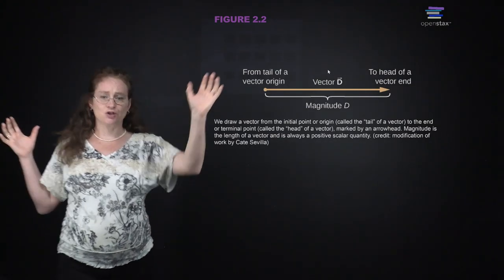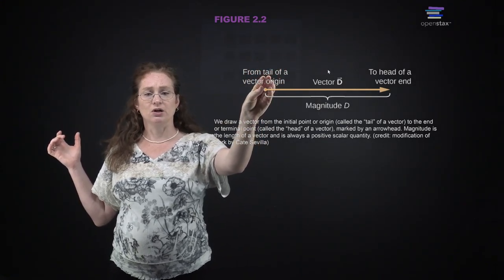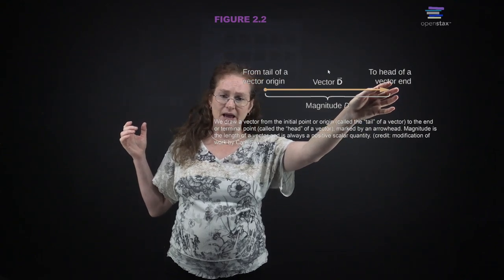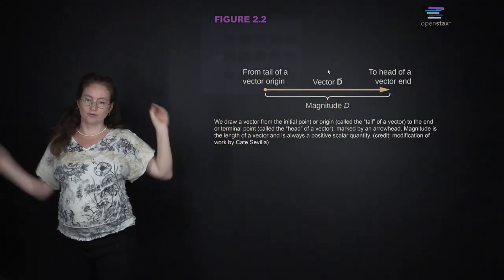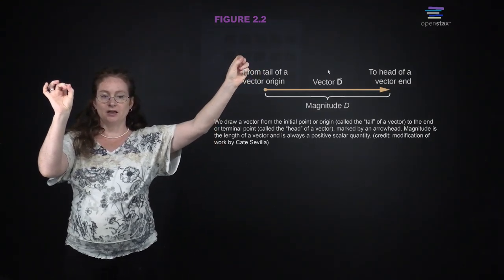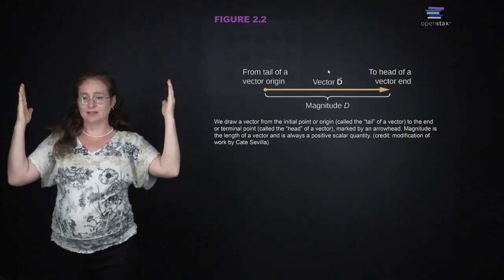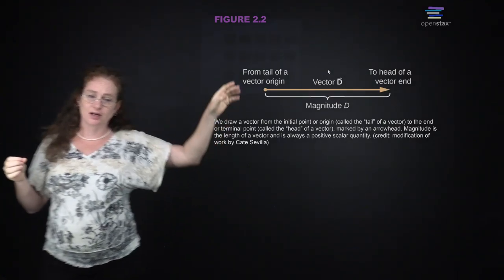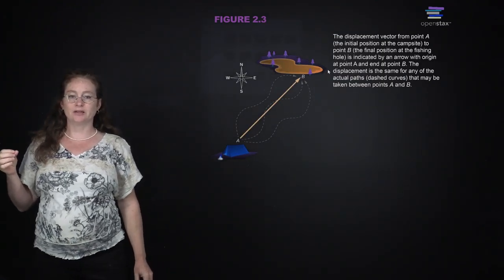When we have a vector, we start with the tail. If you're talking about displacement, the tail of the vector starts where you start, and the arrow on the other end is called the head. You draw an arrow from the tail to the head. So if you are talking about the vector between Knoxville and Nashville, you draw the tail in Knoxville and the head in Nashville. The vector has a direction and a length - the magnitude is the length, and the arrow gives you the direction.